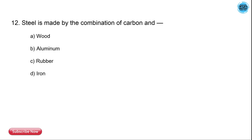The 12th question is: steel is made up of a combination of carbon and which of the following? The options are wood, aluminum, rubber, and iron. Steel is made up of a combination of carbon and iron.